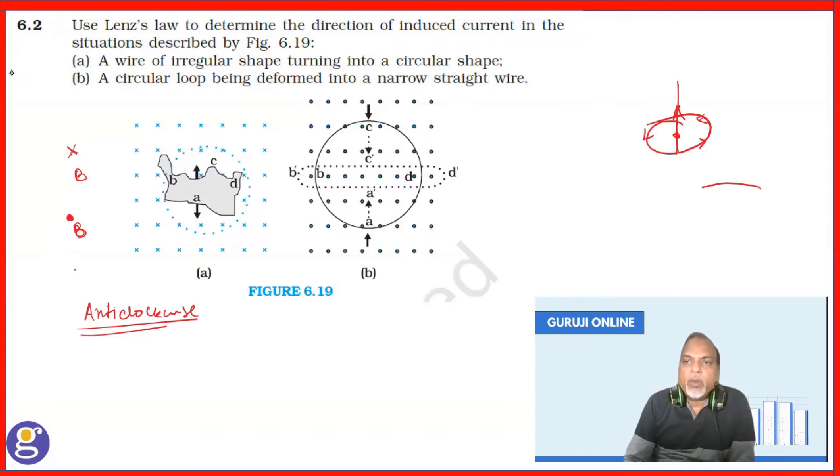Or you have a loop where anti-clockwise, if you are seeing from above, anti-clockwise, then your magnetic field will be like this. So, it has to be,